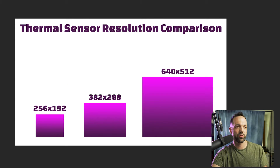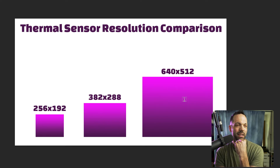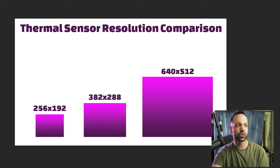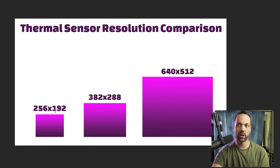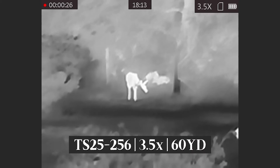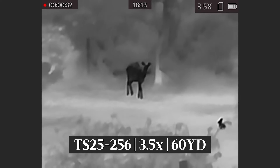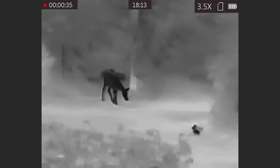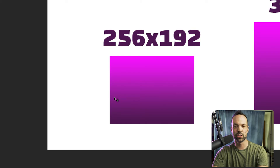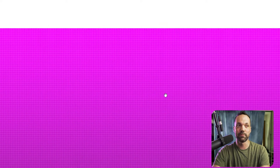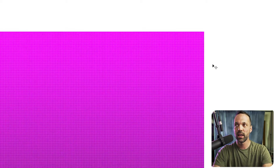AGM scopes fall into one of three categories, and you can see a scale representation of the three different sizes to get an idea of the difference. At the entry level, you're looking at 256 pixels by 192 pixels — those are the microscopic pixels detecting and measuring the infrared radiation pulled in from the objective lens. I actually drew these at accurate scale: 256 pixels wide and 192 pixels tall.